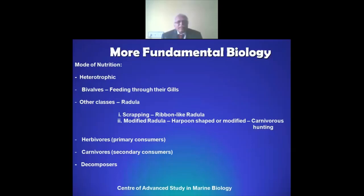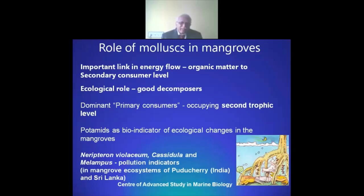Molluscs in general are heterotrophic. There are bivalves that are filter feeding through their gills. Other classes of molluscs use the radula for food collection, either through scraping. There are modified radulae in three families — Conidae, Turridae, and Terebridae — that have harpoon-shaped or modified radulae used as a water gun to paralyze their prey. Molluscs in general are herbivorous, carnivorous, and they are also very good decomposers.